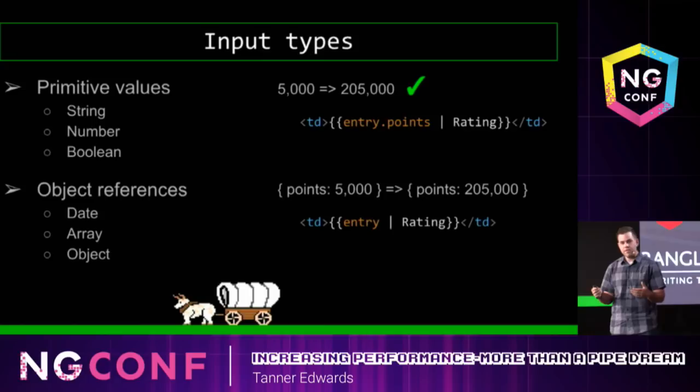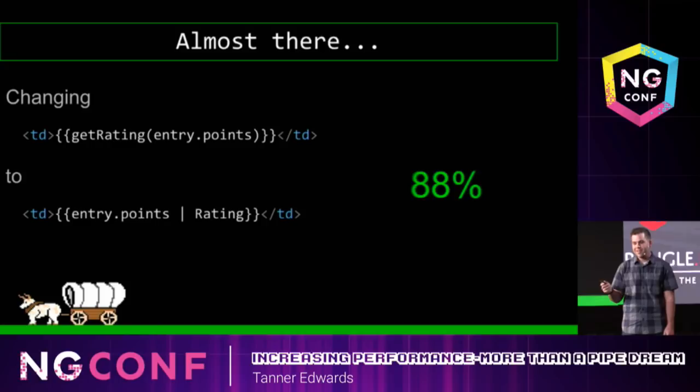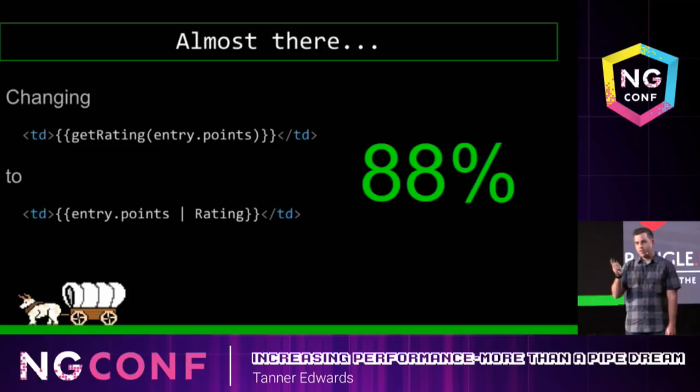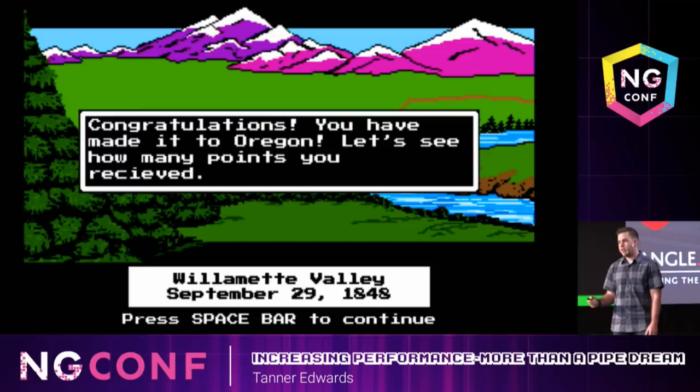And that's it. By simply changing our function to a pipe, we're able to reduce the number of calls to that function by 88%. And that's no pipe dream. Angular is full of things like this that, once you really get down and understand it, can really make a difference in your apps between reaching your goals — and this. Thank you, guys.